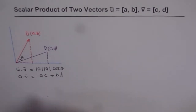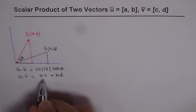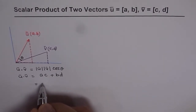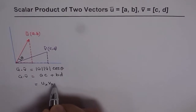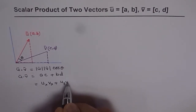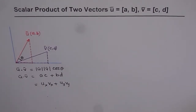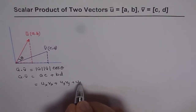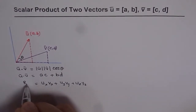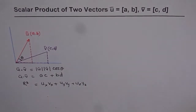In general, we write U dot V as the product of U and V components in the X direction, plus U and V components in the Y direction. That is how we get the dot product in R2. If it is R3, then it extends further: we add the product of the Z components as well. So algebraically, the dot product of two vectors in R3 includes all three component products.